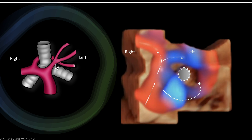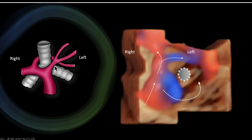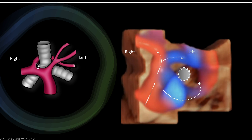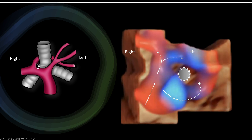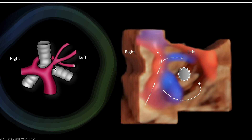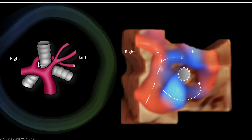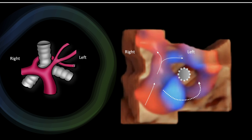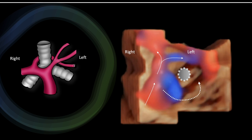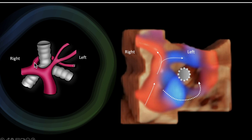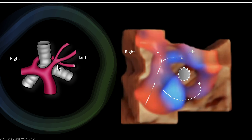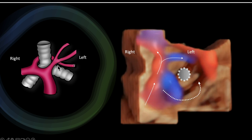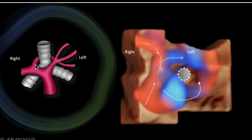The entire left pulmonary artery is not coming from the right pulmonary artery — it is just one branch; the second branch is normal. This is called a partial anomalous left pulmonary artery coming out of the right pulmonary artery. Once it comes from the right pulmonary artery, it usually goes behind the trachea and this forms a vascular ring.